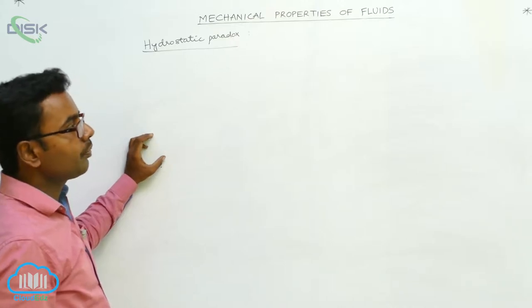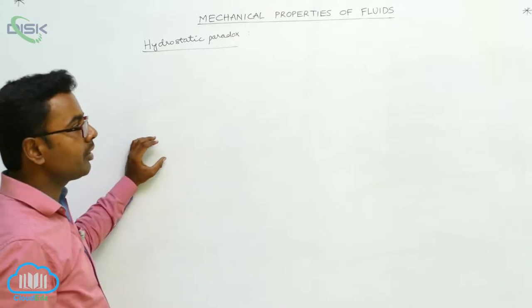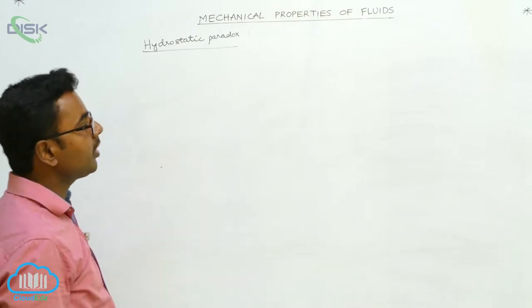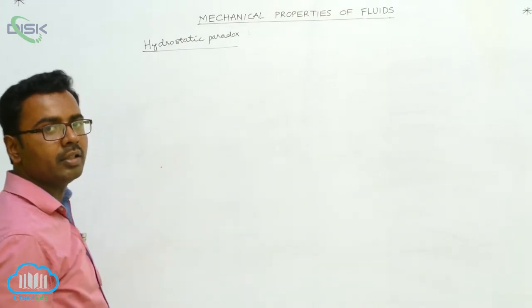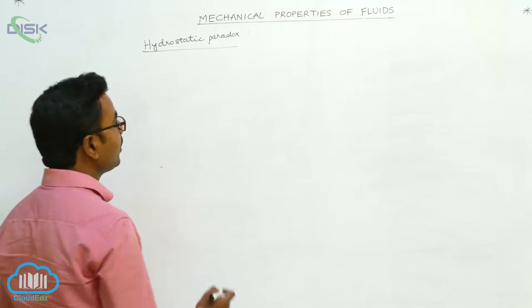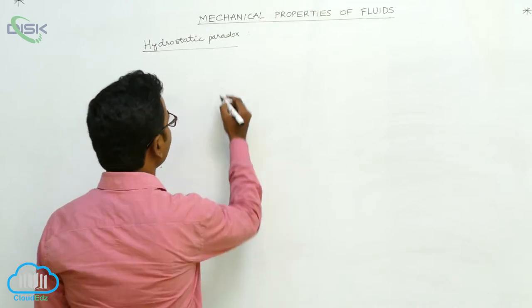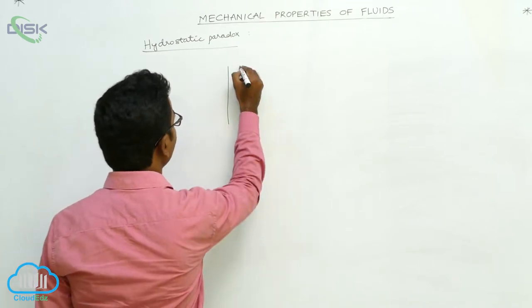Pascal's law can also be explained by using the example of hydrostatic paradox. This hydrostatic paradox contains different containers of different shapes.